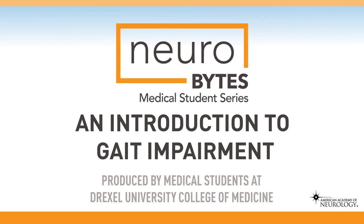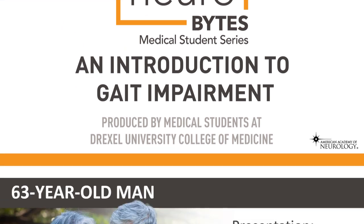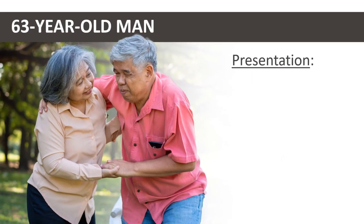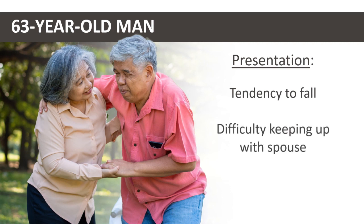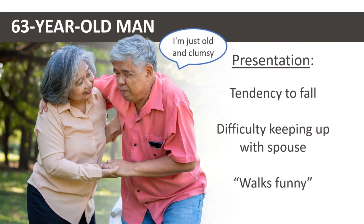An Introduction to Gait Impairment. A 63-year-old man is brought into your office by his spouse for an increased tendency to fall, especially when turning around the corner to reach the refrigerator. His spouse also reports he can't keep up anymore during their walks around the neighborhood and that he walks funny. The patient insists he is just old and clumsy, but decided to come in upon his spouse's insistence.